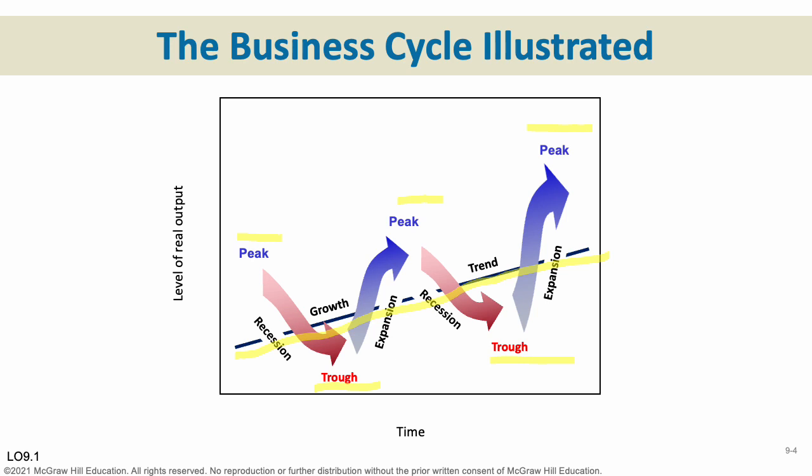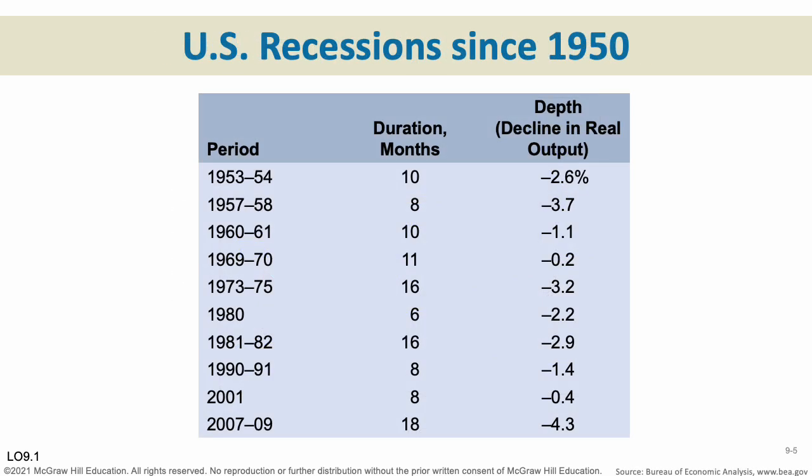Recessions aren't something that we should always melt down about — they're a normal part of the economy. Recessions like we saw in 2008, or something like the Great Depression, that is not normal. Recessions should not be horribly severe, but they should exist because they're just part of a normal business cycle. This is a list of recessions up to the Great Recession in 2008-09. That one lasted a year and a half and was very severe — a 4.3% decline. But many recessions are very minor: some 1%, 0.2%, 0.4%. The actual definition of a recession is two quarters of negative growth.